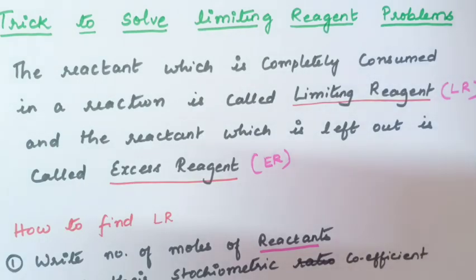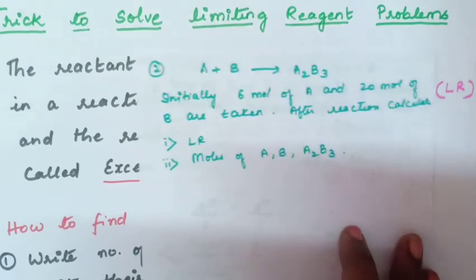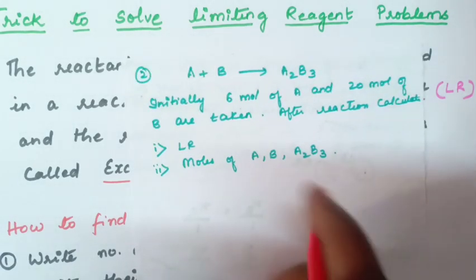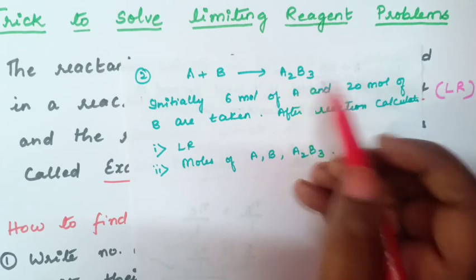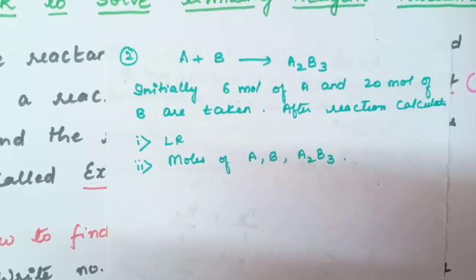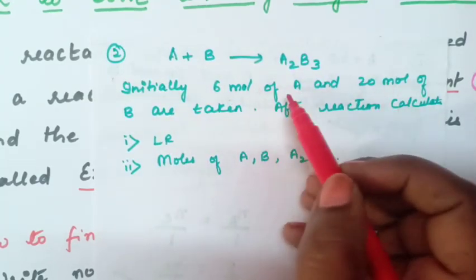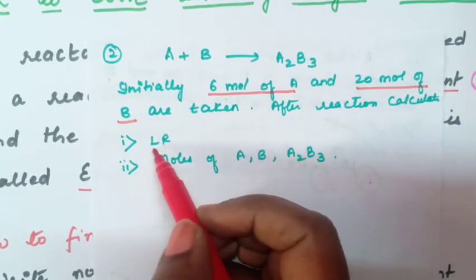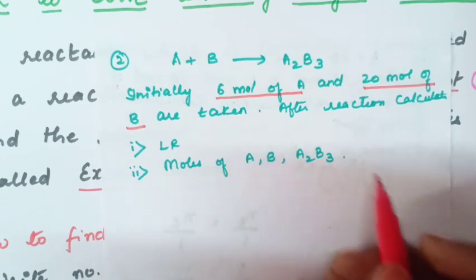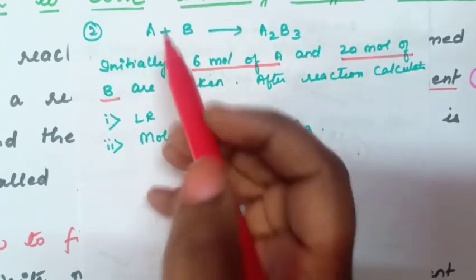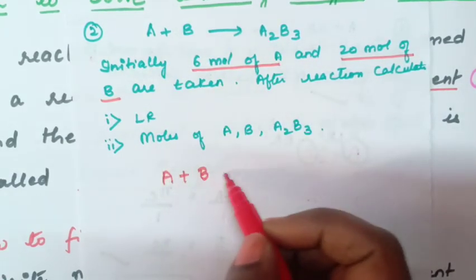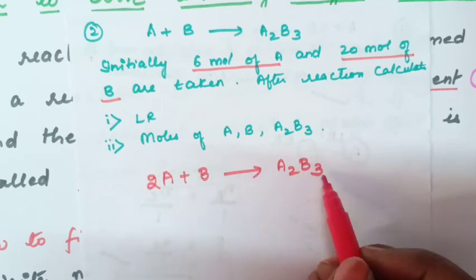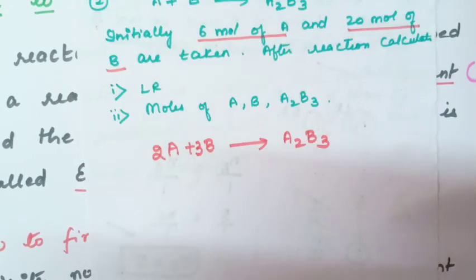Students, let us solve one more question. The reaction given is A plus B giving A₂B₃. Initially 6 moles of A and 20 moles of B are taken. After the reaction, calculate LR and moles of A, B, and A₂B₃. First, write the balanced equation: 2A plus 3B giving A₂B₃.